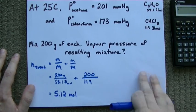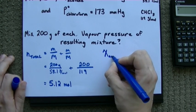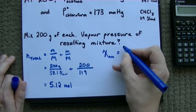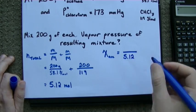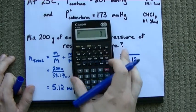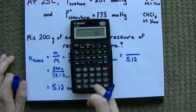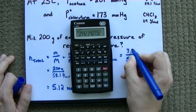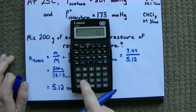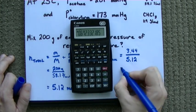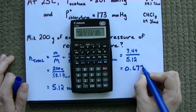So, the mole fraction of acetone is the number of moles of acetone out of the total number of moles that we have. Oh crap, I forget. How many moles of acetone do we have? 200 divided by 58.1. 3.44. 3.44 divided by 5.12 gives me a mole fraction of 0.672.